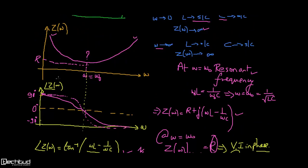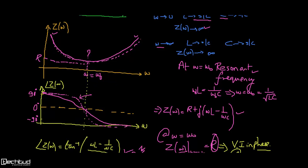We can also plot the magnitude of Z(ω). Because of the 1/(ωC) and ωL terms — one linear and one inverse — the curve has a characteristic shape with a minimum at ω₀. Similarly, we can plot the phase. Depending on the R, L, and C values, you can get different magnitude and phase plots with varying sharpness of the turn at resonance. This sharpness is defined by the quality factor Q — a higher Q gives a sharper turn. We will discuss the quality factor in detail later, along with its mathematical definition.